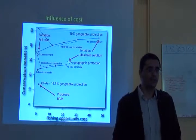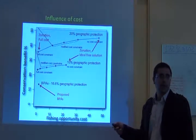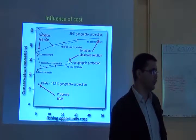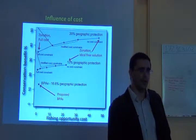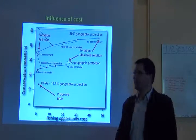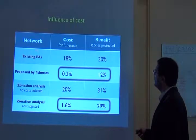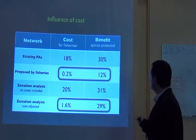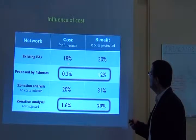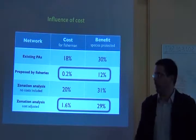The cost-included solution isn't that bad — you lose about 10% of conservation benefit, but you reduce costs by more than 50%. The lower the cost, the higher the chances the plan will actually be implemented. Looking at the existing protected areas in New Zealand, they are recovering about 30% of species but have about 18% of fishing opportunity costs.